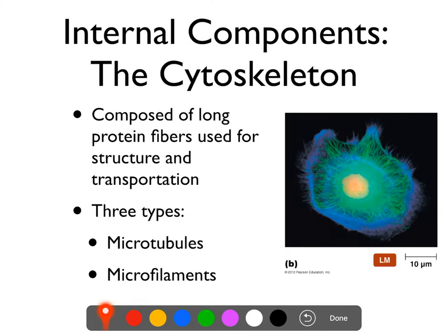The last part of eukaryotic internal structures is the cytoskeleton. The cytoskeleton is kind of what gives structure to the cell — it's like a skeleton for the cell, as you might guess from the name.